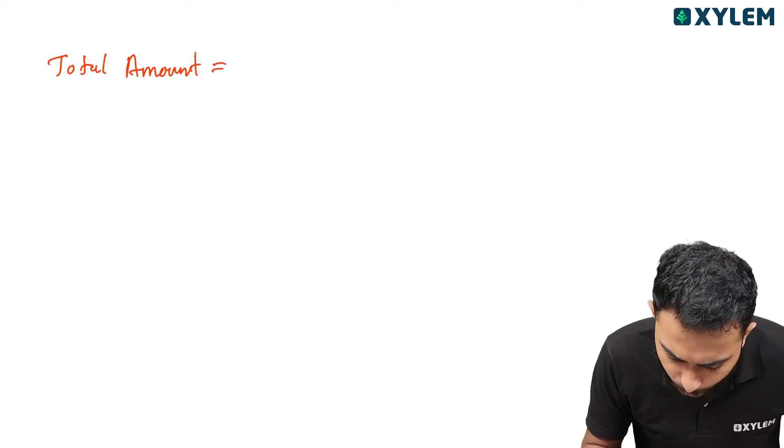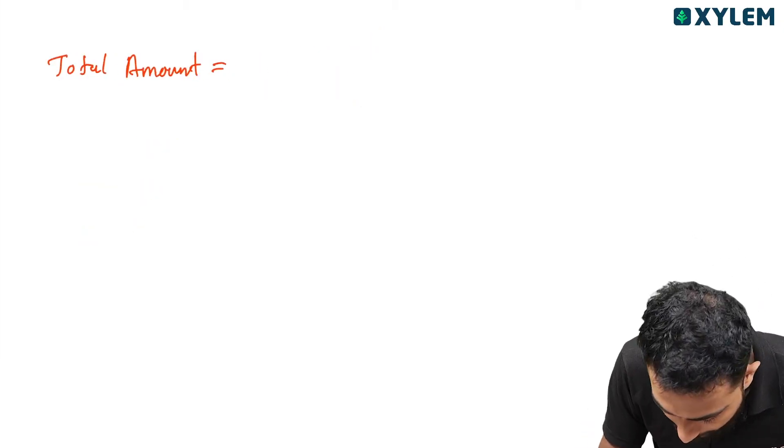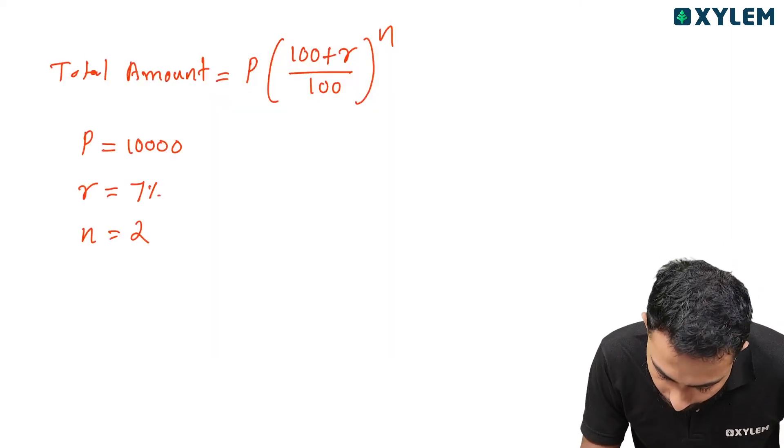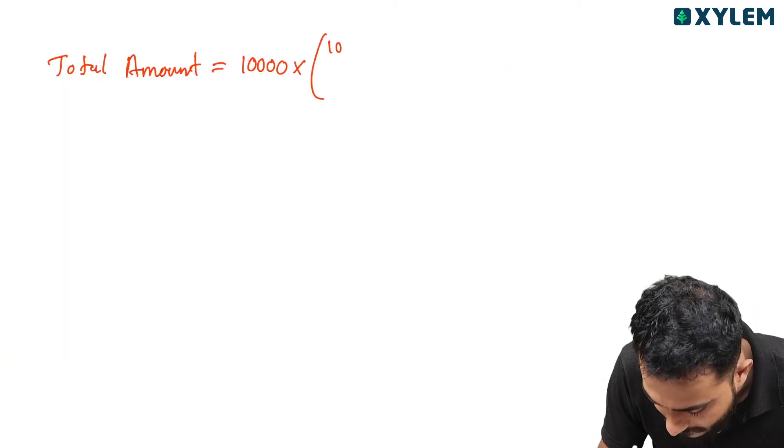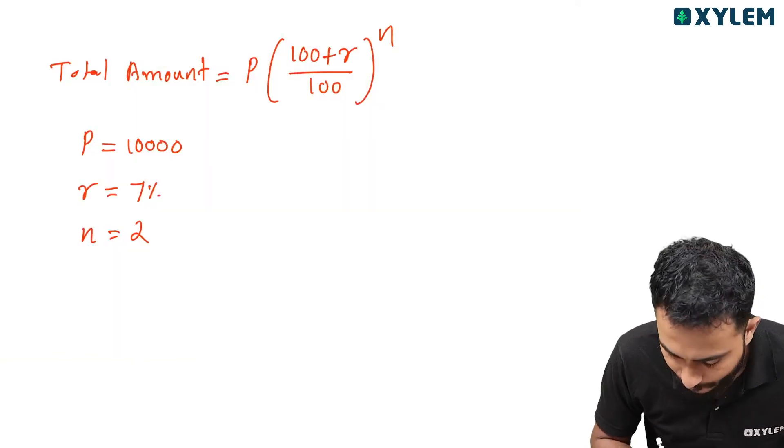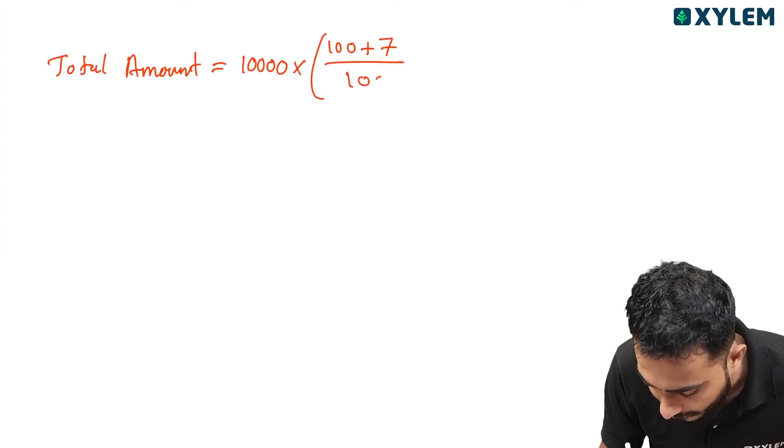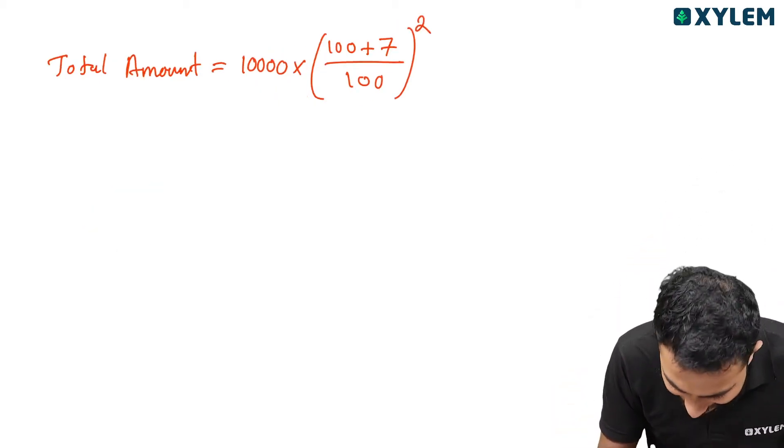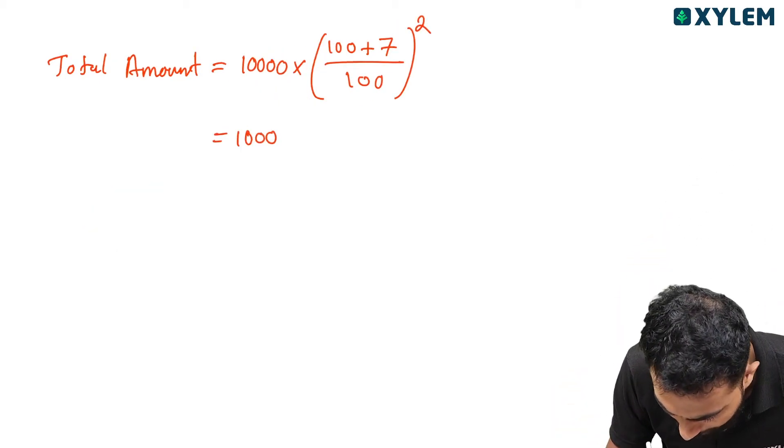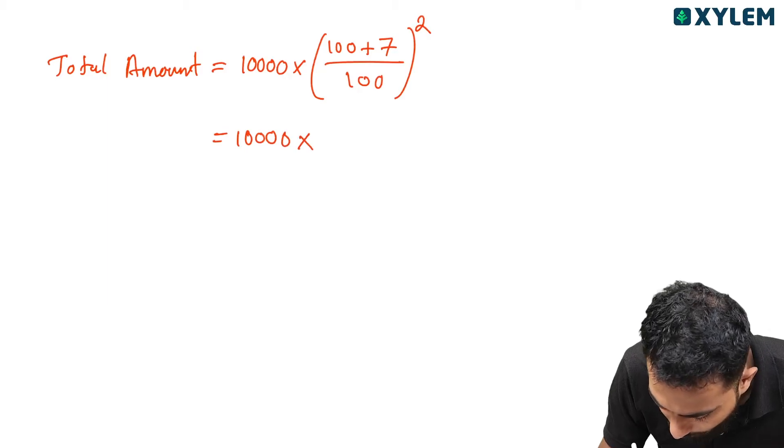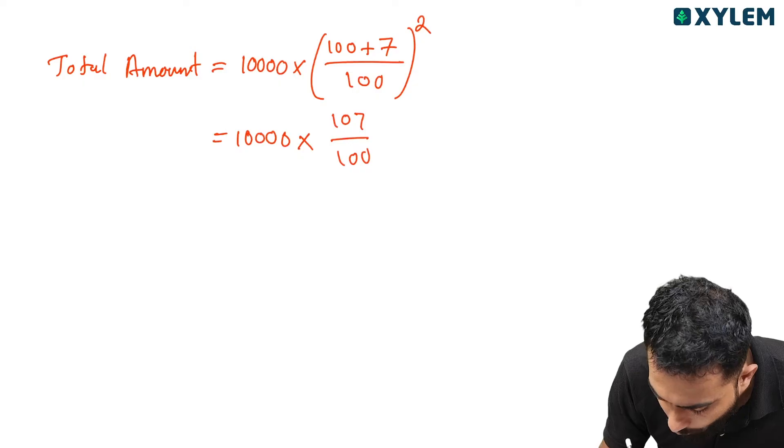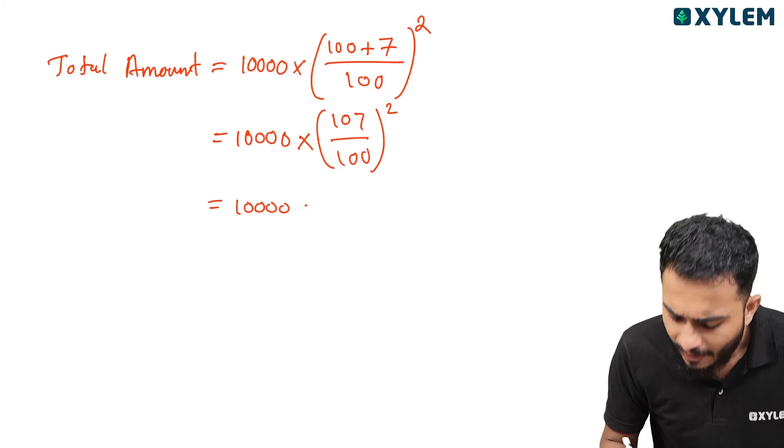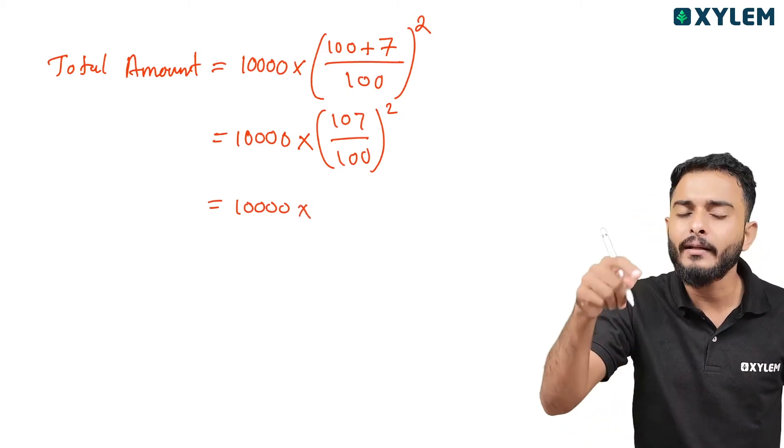So the equation is P × (100 + R)/100 raised to N. That's 10,000 × (100 + 7)/100 raised to 2, which equals 10,000 × (107/100) squared.